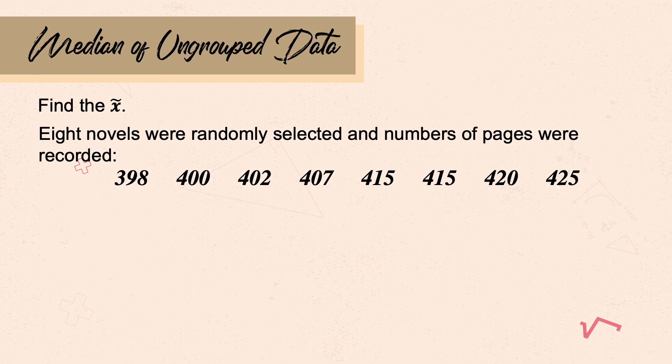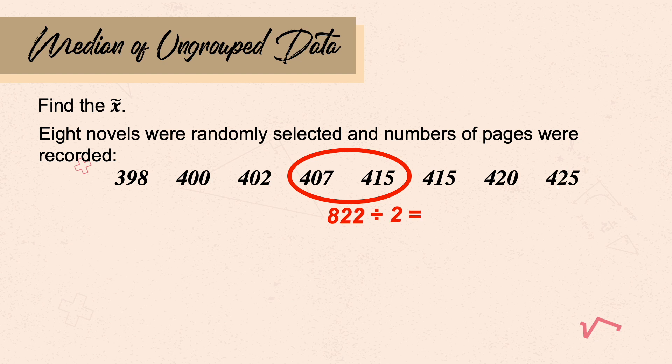Eight novels were randomly selected and the numbers of pages were recorded. This data is already arranged in increasing order. In this case, the sample size is even. When it's even, we simply get the average of the two middle values by adding them and dividing by 2. The two middle values are 407 and 415. Adding these gives 822. Divided by 2, the median is 411.